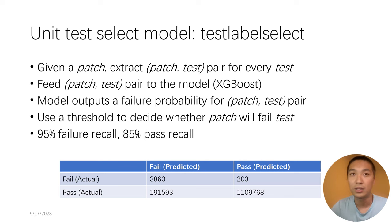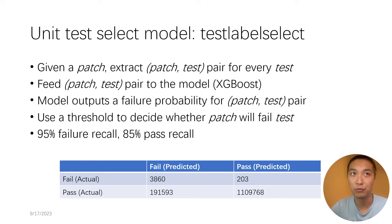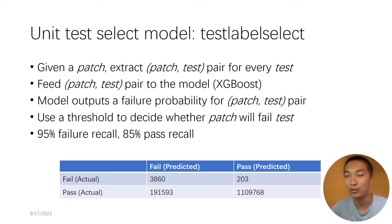Now let me introduce my models. The first model is called Test Label Select. It takes a patch as input and forms a patch-test pair with every unit test. After the pair is formed, it is fed into an XGBoost model, which outputs a failure probability between 0 and 1 for every pair. We then use a threshold to decide whether a patch should fail a specific test. During testing, the model achieves 95% failure recall and 85% pass recall — meaning 95% of actual failures are captured, while 85% of successful tests can be skipped.